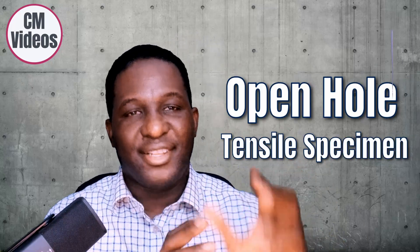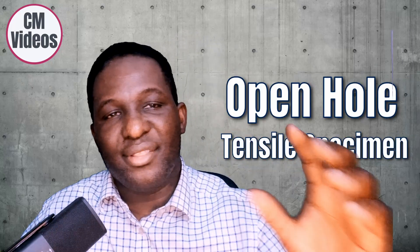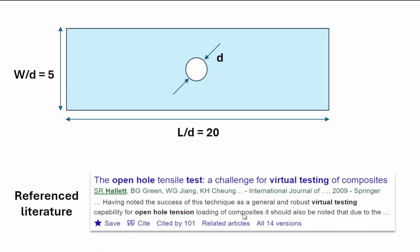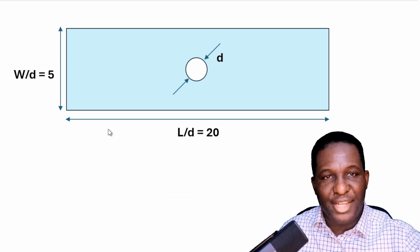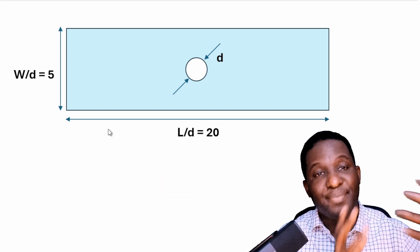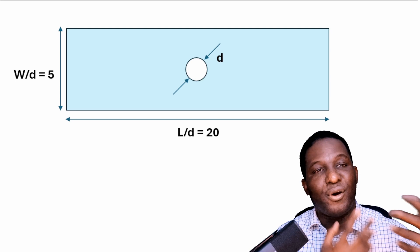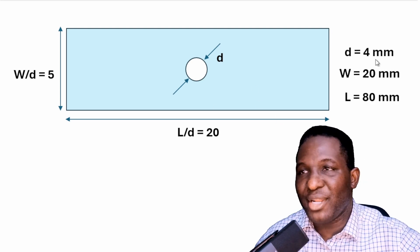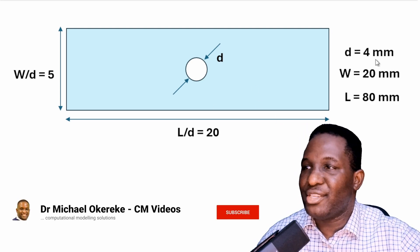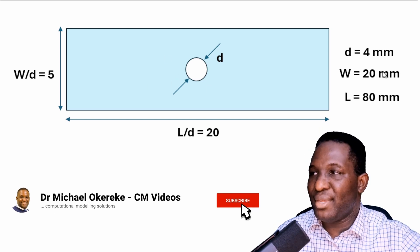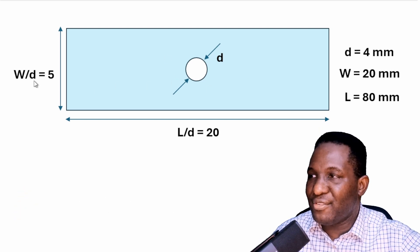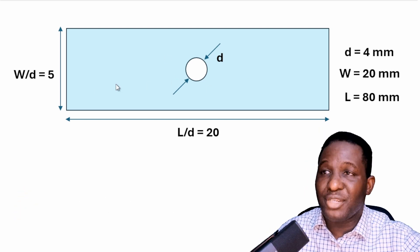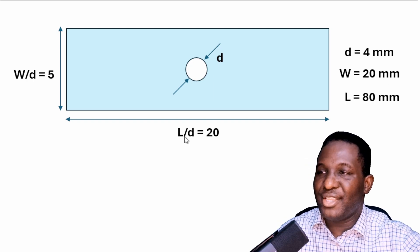We're going to start with an open hole tensile test specimen, taken from this publication. They've looked at typical combinations of width and length that give optimal behavior for an open hole tensile test specimen. The diameter here is 4 millimeters, and the width-to-diameter ratio is 5, giving a width of 20 millimeters and a length of 80 millimeters.